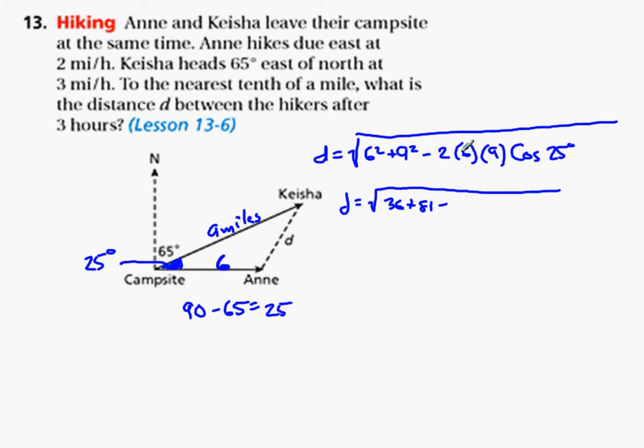12 times 9 is 108. So I have 108 times the cosine of 25 degrees.